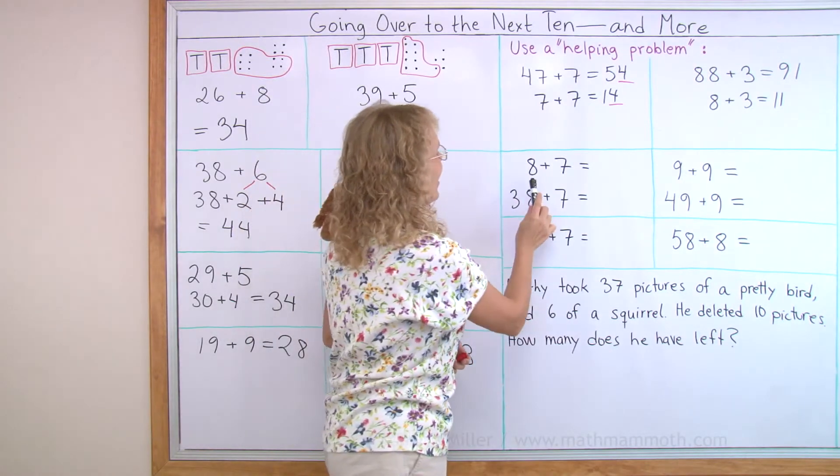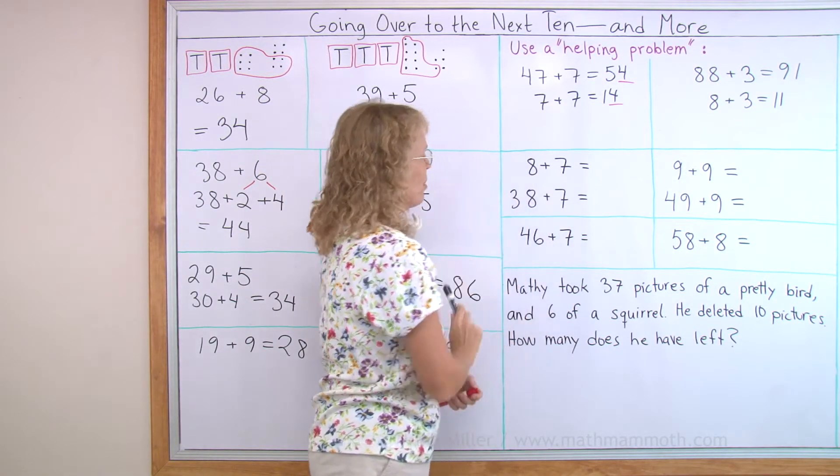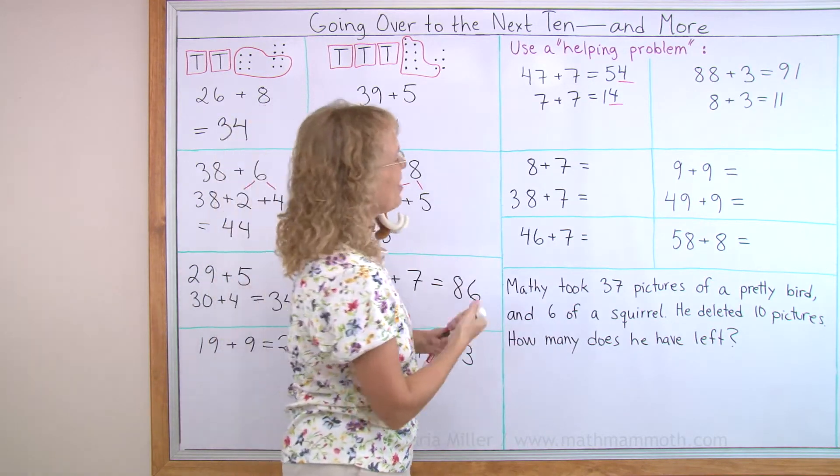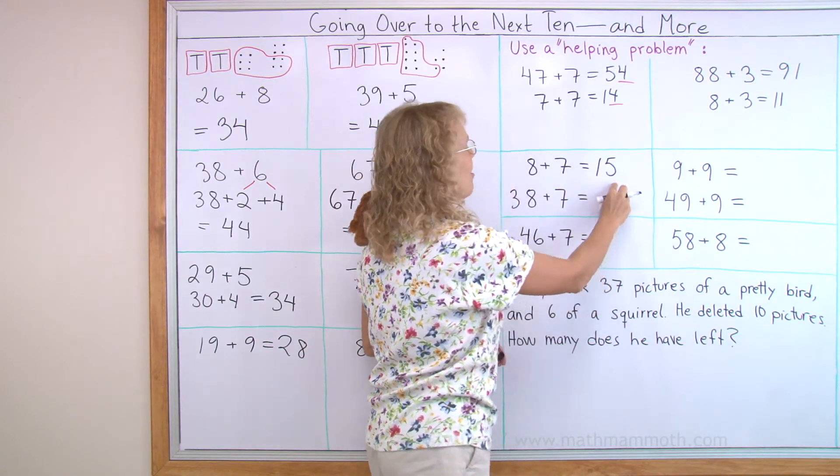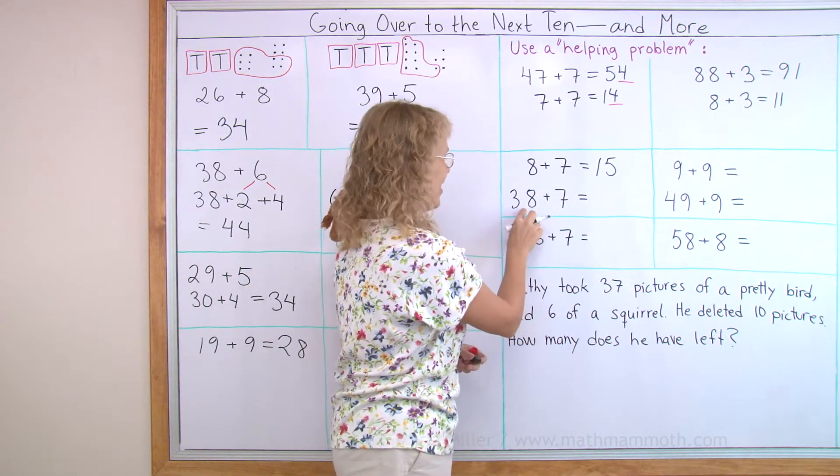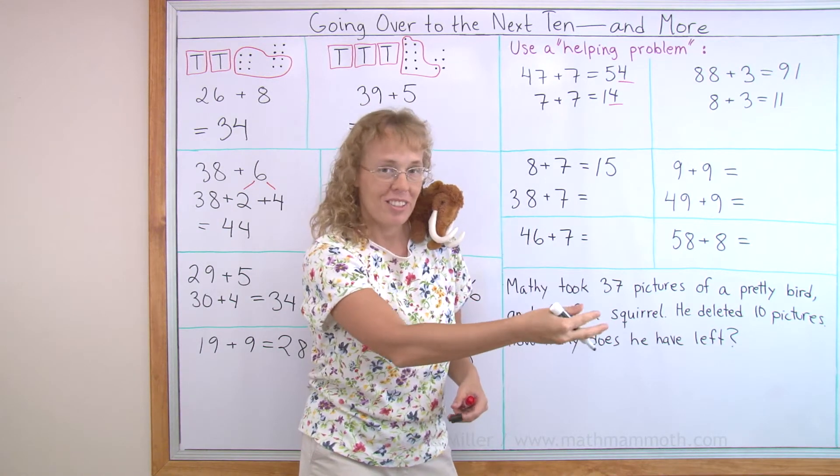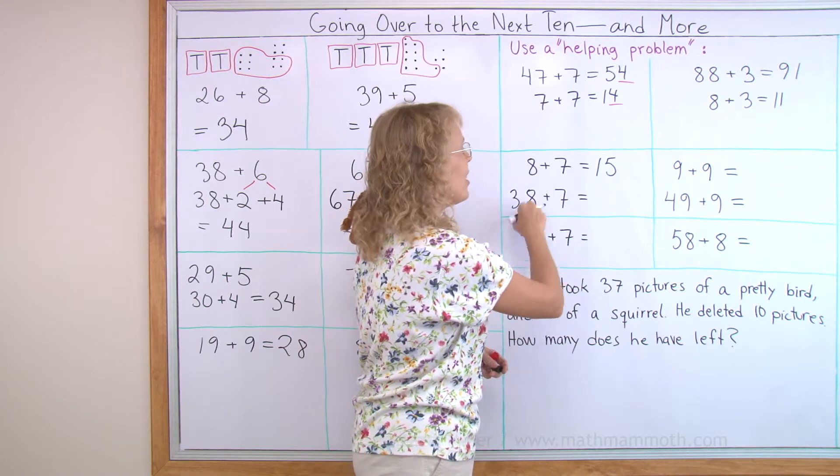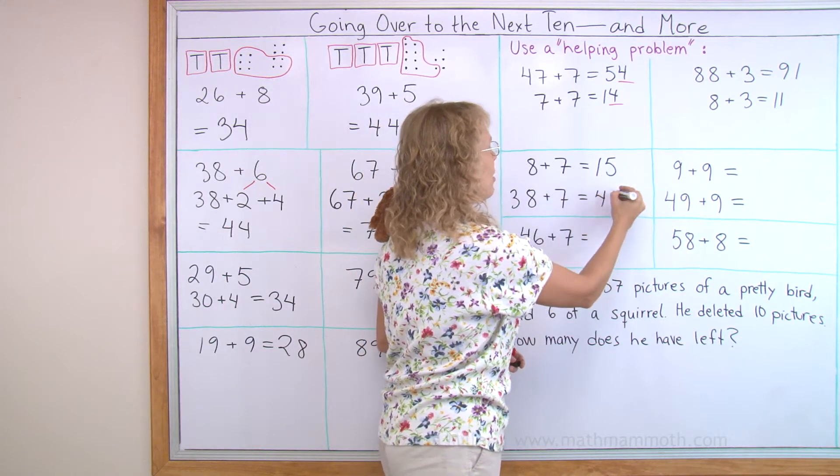Again, here's our problem and here's the helping problem: 8 plus 7, which you should know is 15. Think of it as 10 and 5, or it went 5 over the 10. And this one here will go 5 over the next 10. It's 30 something, so the next 10 is 40 something. It will be 45.